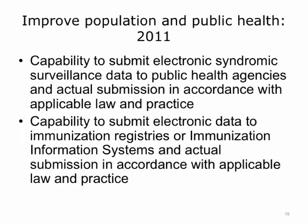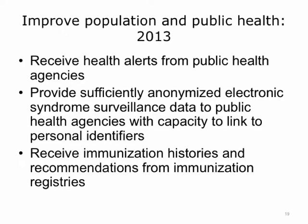By 2011, EHR systems are asked to be capable of submitting electronic syndromic surveillance data to public health agencies in accordance with applicable law, and to send electronic immunization registry information to the public health agency. By 2013, the goal would be to enable an EHR system to receive public health alerts to display to the provider at the point of care, and to provide sufficiently anonymized electronic syndromic surveillance data to public health agencies — not just counts of how many people have fever, but a list of identifiers for patients that could be used for follow-up in the case of an outbreak, whether that's flu or some other potential emerging disease.